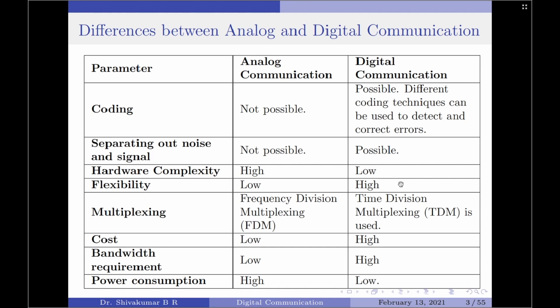Talking about multiplexing, analog communication uses frequency division multiplexing. On the other hand, digital communication uses time division multiplexing. The next parameter is cost. Analog communication systems are of low cost, whereas digital communication systems cost a little high.